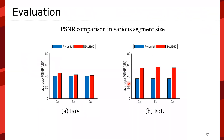Let's look at the PSNR comparison across various segment sizes. In the FOV comparison, we see about 3 to 5 dB improvement over the pyramid. In the foveal region, we have more than 20 dB improvement across various segment sizes, reflecting what people actually perceive in terms of perceptual quality.